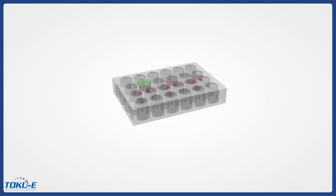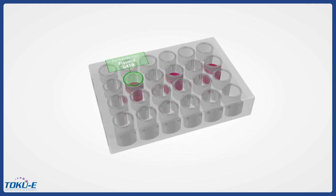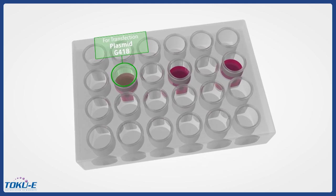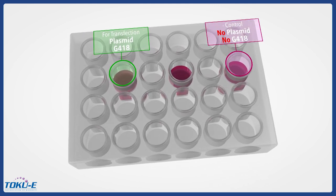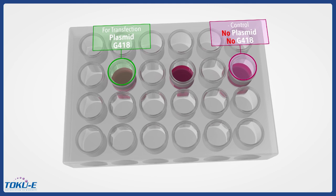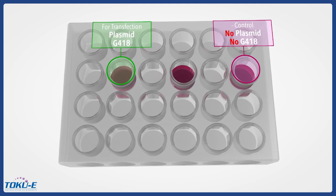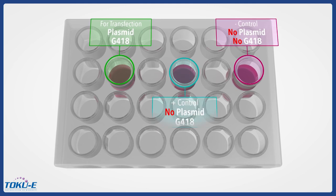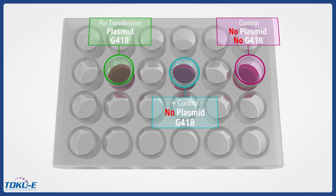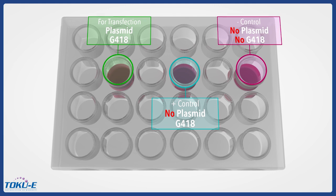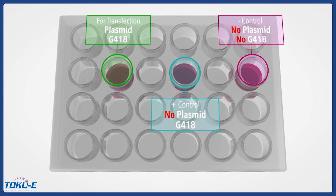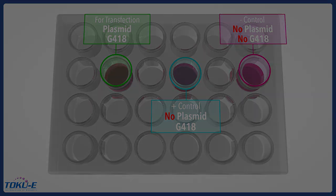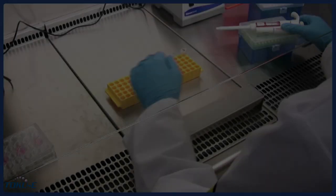We will transfect one of these wells with the plasmid according to the protocol of the transfection reagent manufacturer. One well will serve as a negative control and will lack the plasmid and antibiotic in order to monitor the growth of the parental cells. The remaining third well will serve as a positive control and will contain only the selection antibiotic G418 and culture medium to monitor the effect of the antibiotic on cell death.